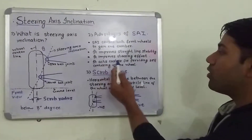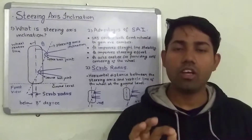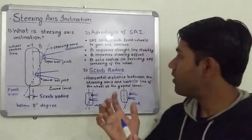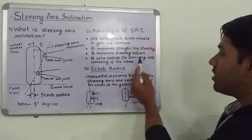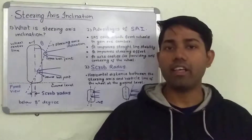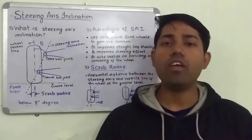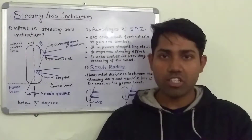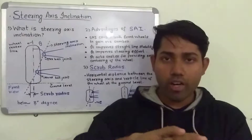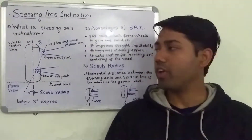Third, it improves steering effort — it is a very important point that steering axis inclination provides better steering effort. It also adds caster for providing self-centering of the wheel. Caster provides self-centering of the vehicle, meaning when you are going on a straight path, after taking a turn it provides self-centering so that you don't have to manually unsteer the wheel.